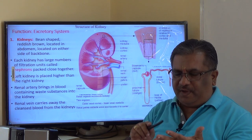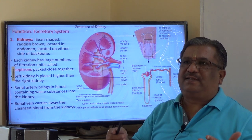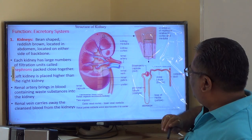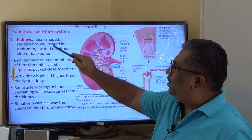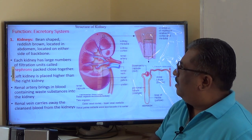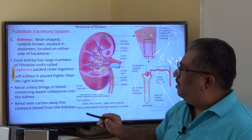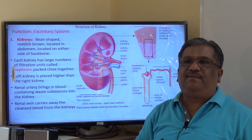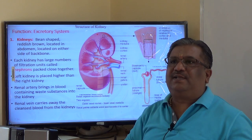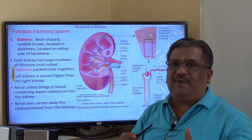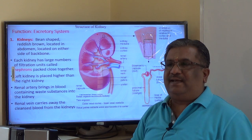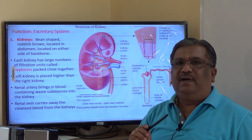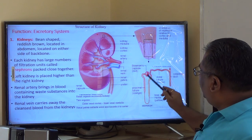The kidneys are bean-shaped, reddish-brown, located in the abdomen on either side of the backbone. Each kidney has a large number of blood filtration units called nephrons. Nephrons are also called the functional units of kidneys — they filter the blood and urine formation takes place in the nephron. Each kidney has approximately two million nephrons.